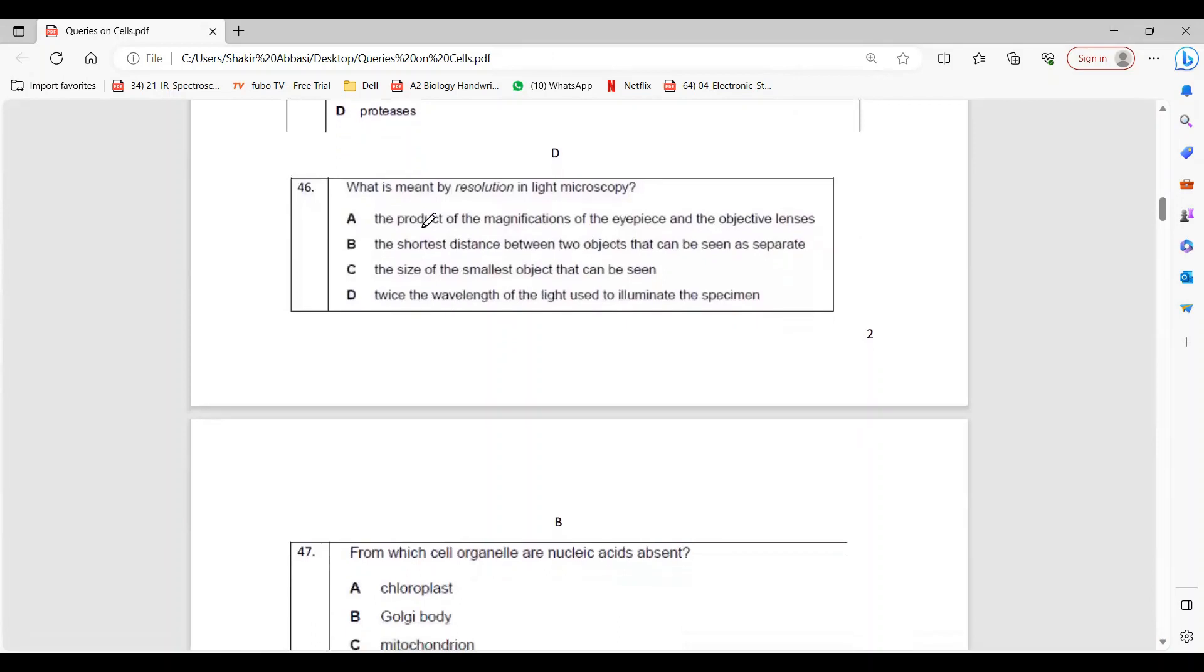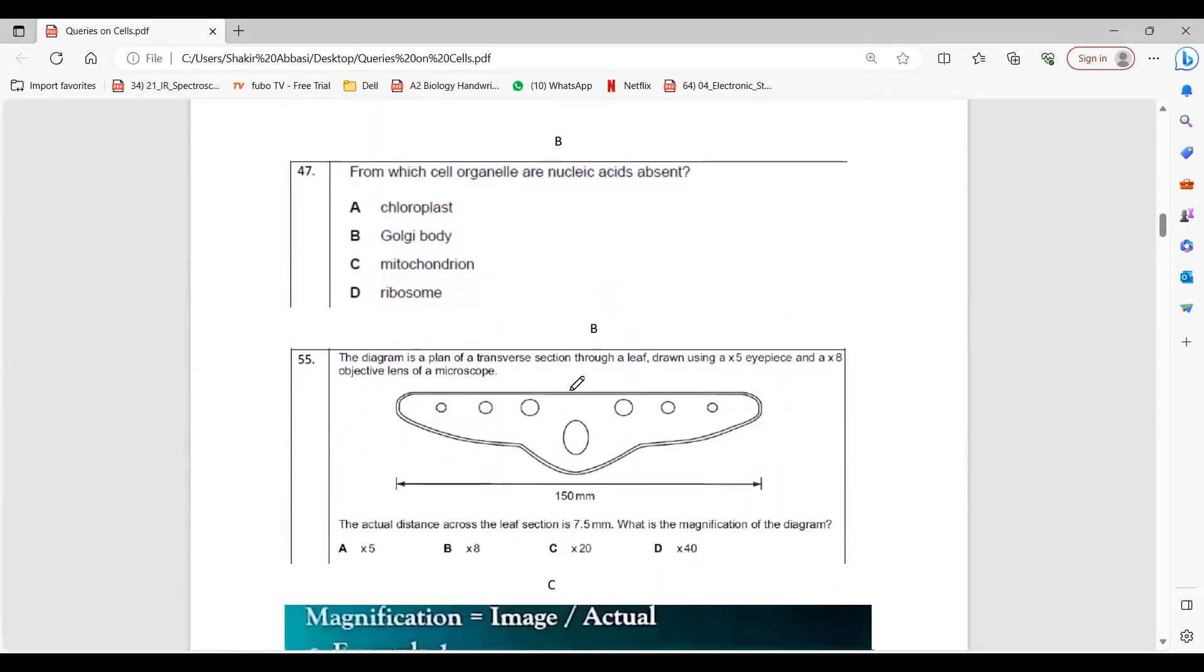Then the question is about what is meant by resolution. Resolution is basically the clarity of objects - how you can see two closely together things separately. So the option is obviously B, the size of smallest object that can be seen is not resolution, that's just an information. We say that you cannot see very small objects with light microscope. At times we say ribosome cannot be seen because it's too small, because magnification is not very much useful. When you zoom in too much with light microscope, things get unclear. So that's why B is the right definition of resolution.